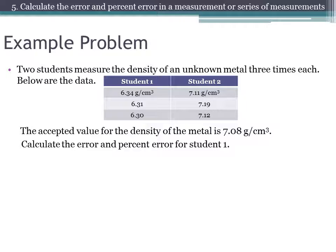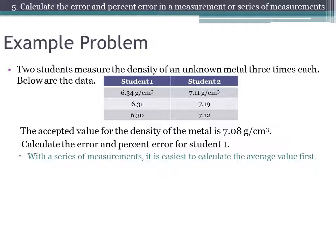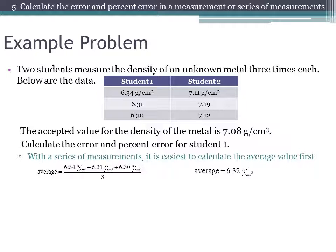Here is another example. Two students measured the density of an unknown metal three times each — the exact same data we just saw — and the accepted value is still 7.08 grams per centimeter cubed. We are asked to calculate the error and percent error for student 1. Notice we have three data points. We do not have to do the calculation for every single data point; whenever we have a series of measurements, we calculate the average first. Student 1's average data is 6.32 grams per centimeter cubed.